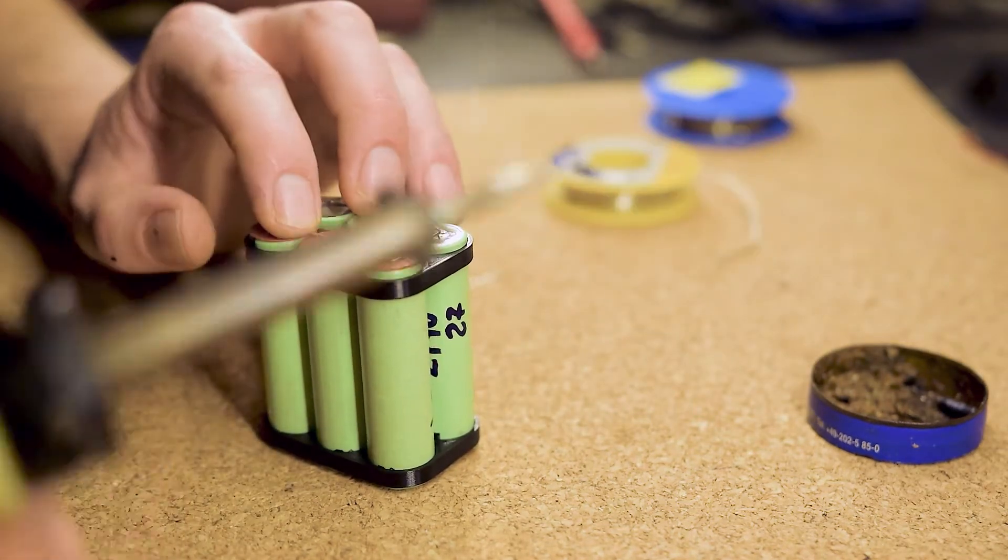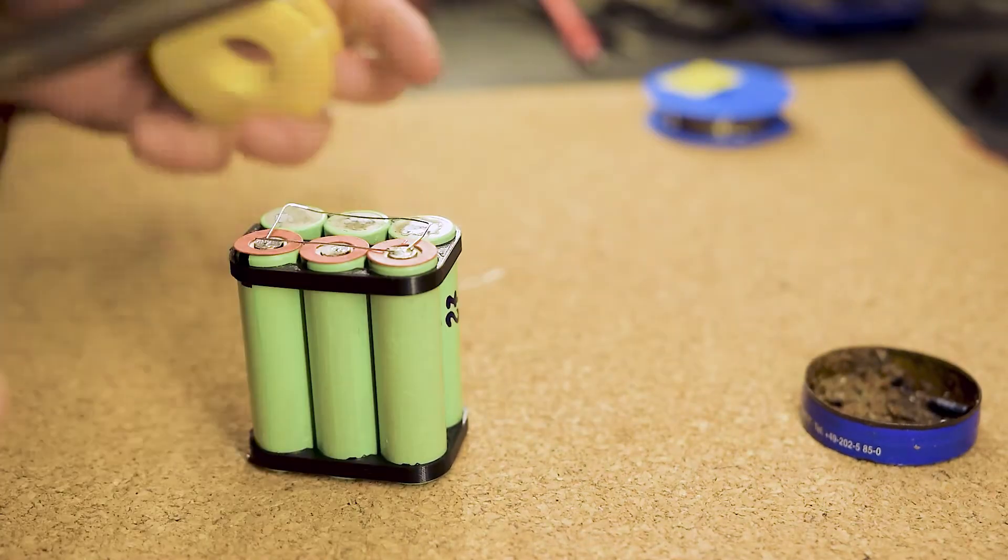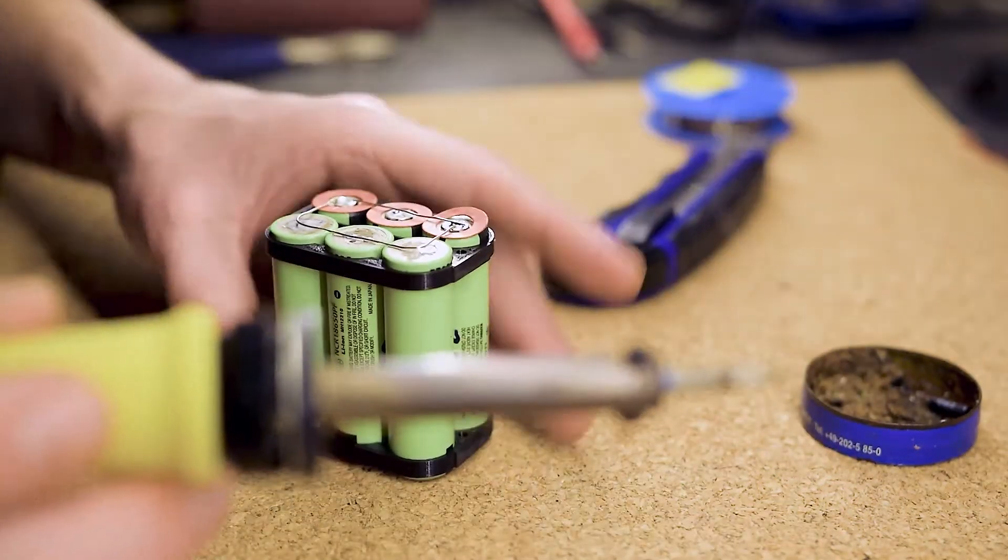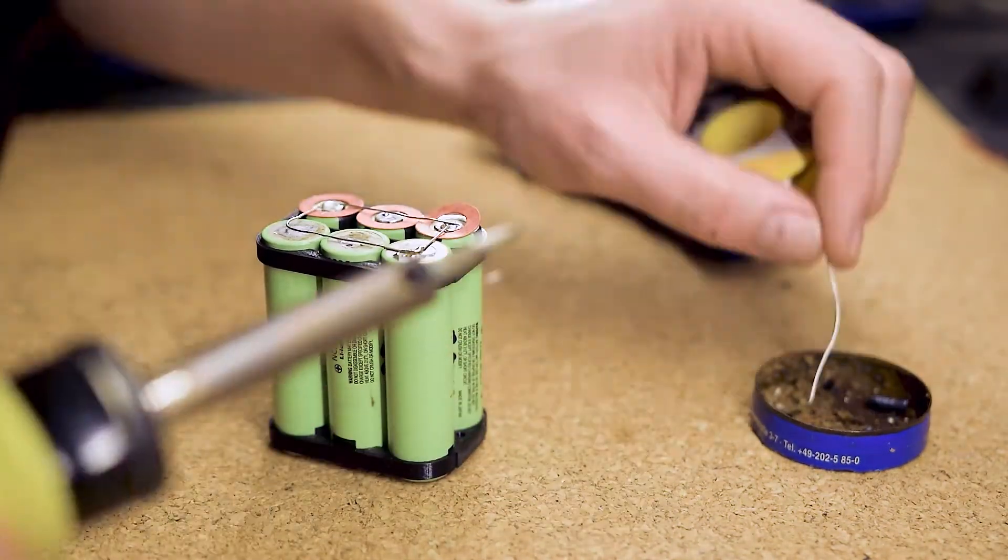Now we start soldering the wire to the cells. Keep in mind, excess heat will damage the electrodes of the cell, so make sure to heat them up only for short periods of time. Use the soldering iron with at least 30 watts.